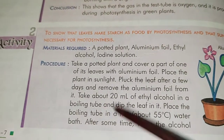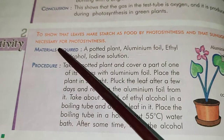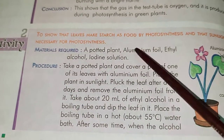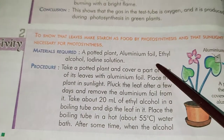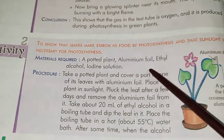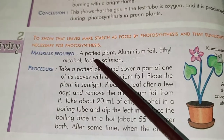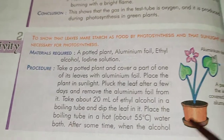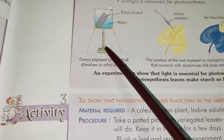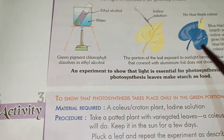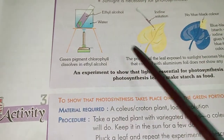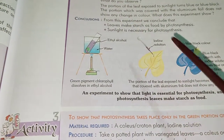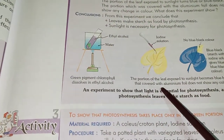Number two: the aim is to show that leaves make starch as food by photosynthesis, and that sunlight is necessary for photosynthesis. Draw neatly, color and describe the procedure. While describing, you can shorten the sentences accordingly.